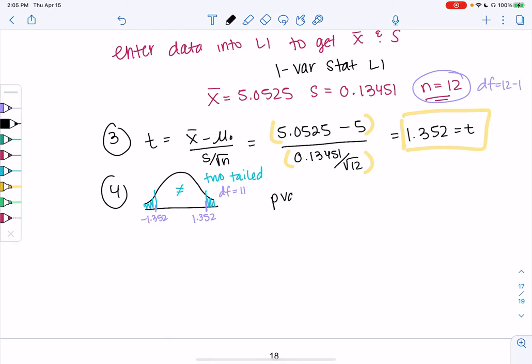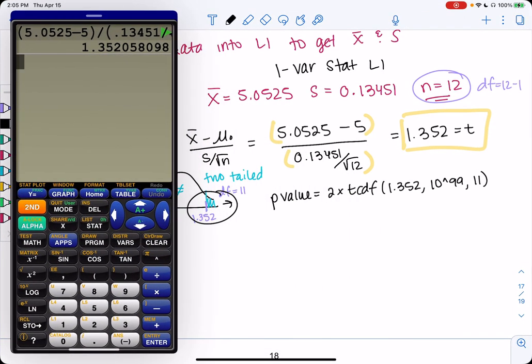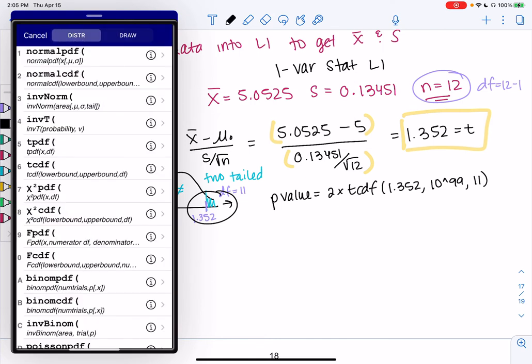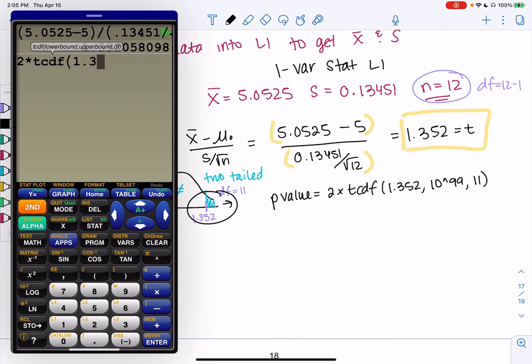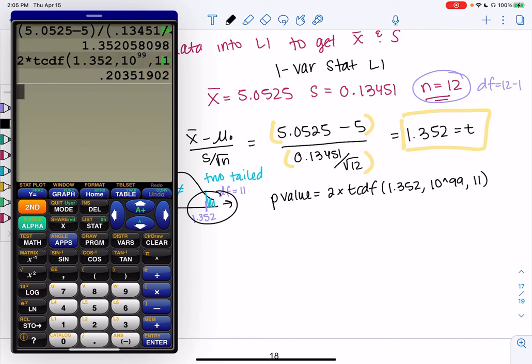All right, so our p-value will be double for two-tailed. T-CDF, because we're on the T-curve. I'll do the right side. So our lower will be 1.352. Our upper will be infinity, because we keep going. 10 to the 99. And degrees of freedom is 11. So 2nd distribution, T-CDF, lower, comma, upper, comma, degrees of freedom. And we get 0.2035.